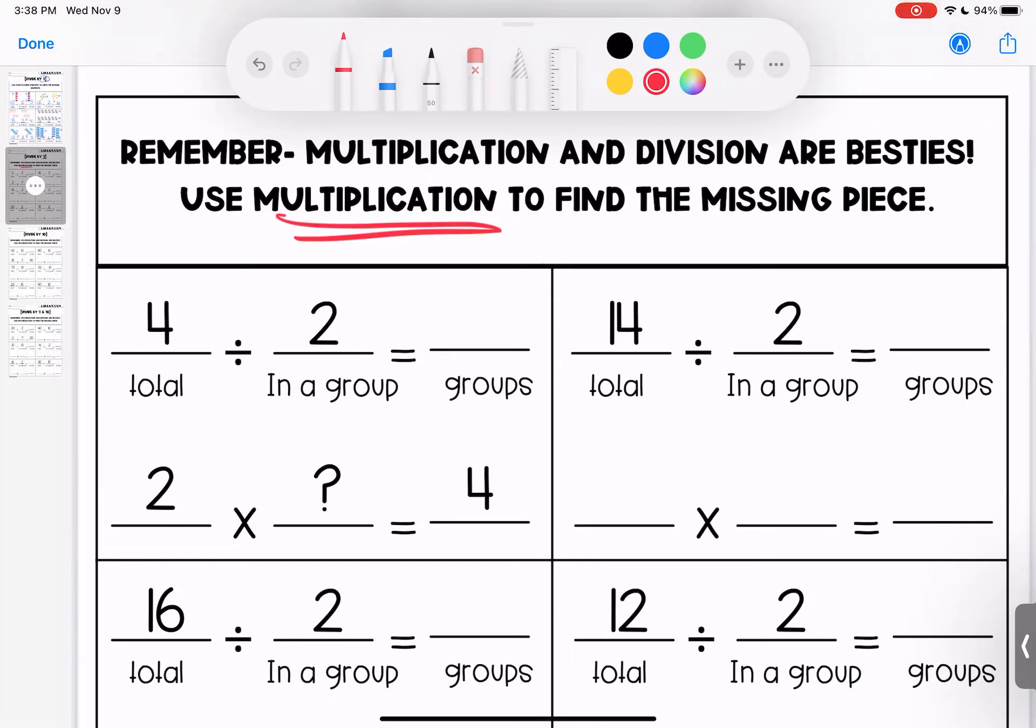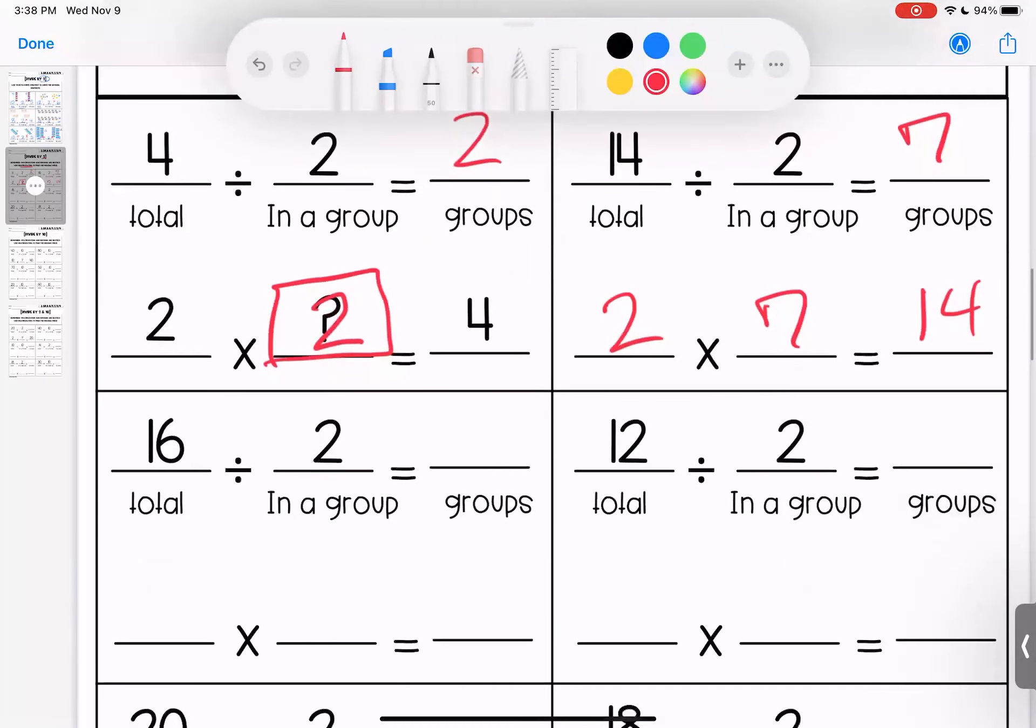So if I'm wondering the answer to four divided by two, I can talk about this as two times the mystery number gives me four. Two times two is four, which means four divided by two is two. Over to here, fourteen divided by two is seven and two times seven is fourteen. Look at these fact families we're making here.